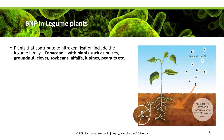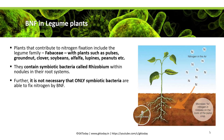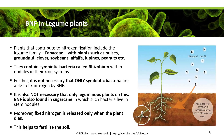BNF in legume plants: plants that contribute to nitrogen fixation include the legume family Fabaceae, with plants such as pulses, groundnut, clover, soybeans, alfalfa, lupins, peanuts, etc. These contain symbiotic bacteria called Rhizobium within their nodules in the root system. It is not necessary that only leguminous plants do this — BNF is also found in sugarcane, where bacteria live in stem nodules. Fixed nitrogen is released only when the plant dies, helping to fertilize the soil.